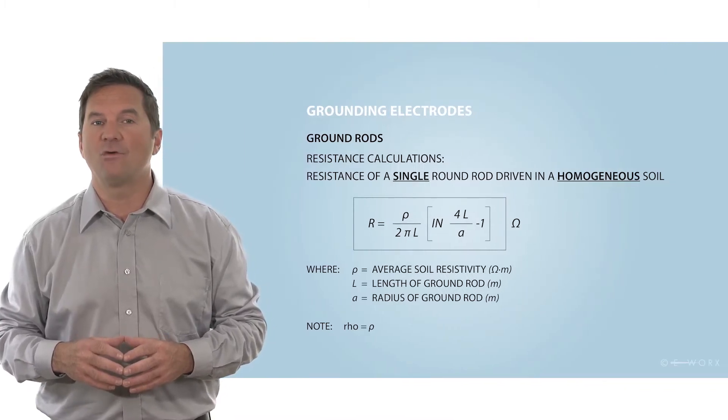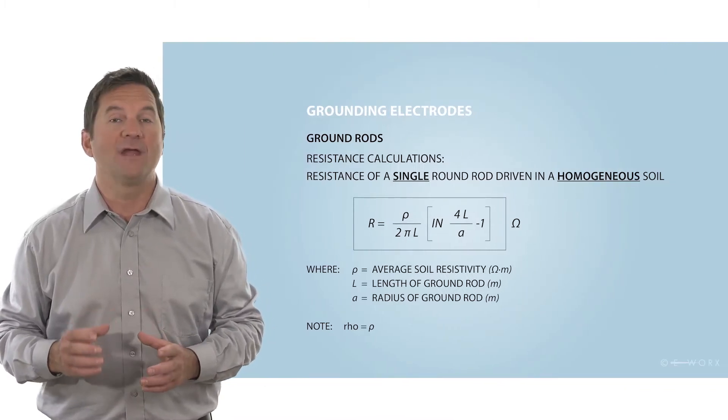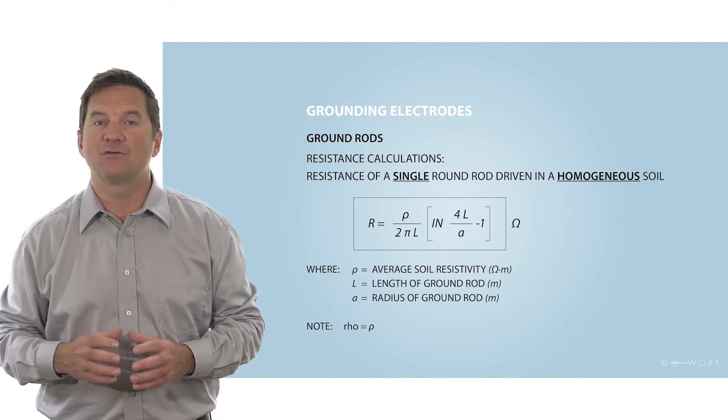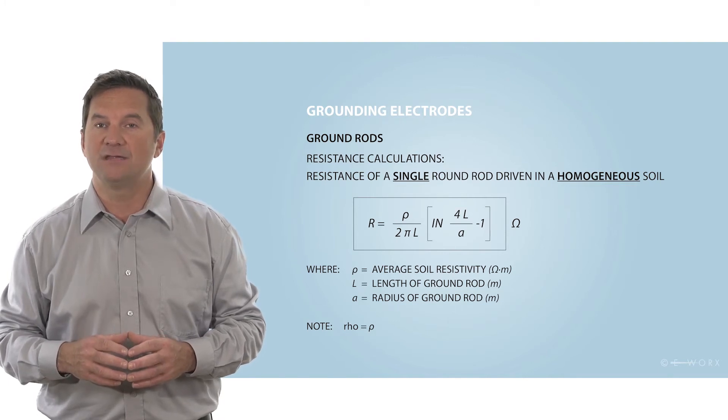The resistance of a single rod of length L and radius A driven into the ground with soil resistivity RHO is given by this equation. Now we'll perform the same analysis for touch voltage.